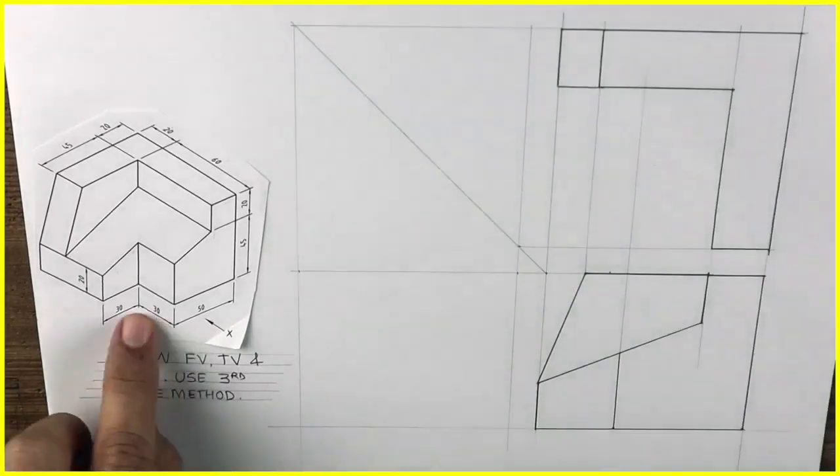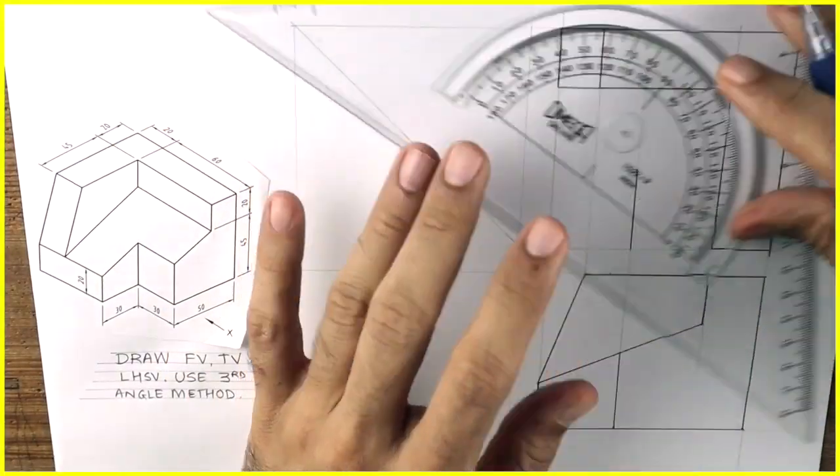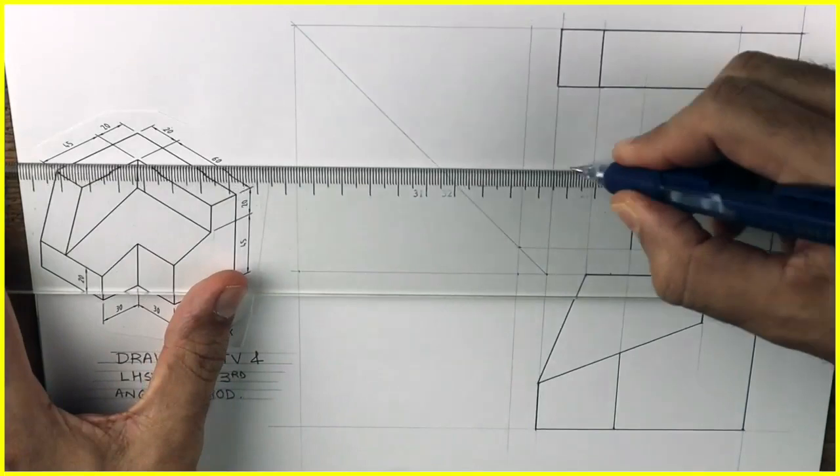That will project from here which is 30. We'll go up by 30 and we'll draw this. So we are done with top view as well.